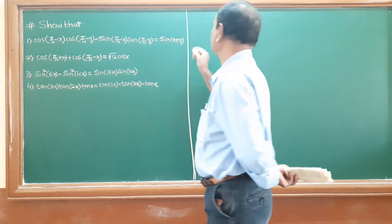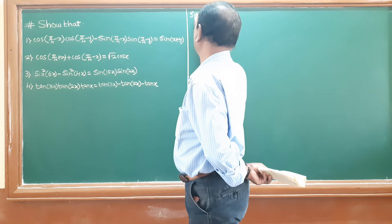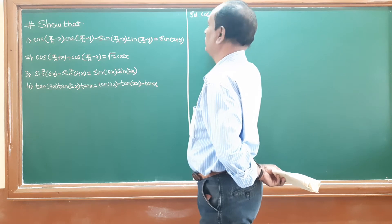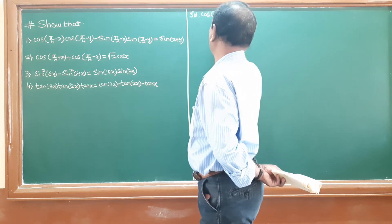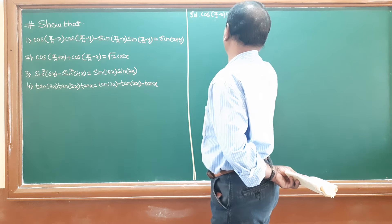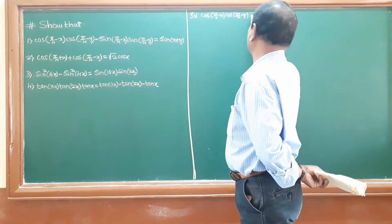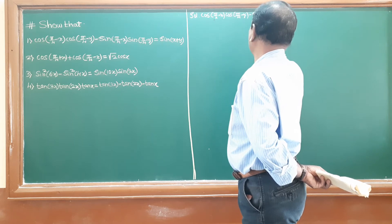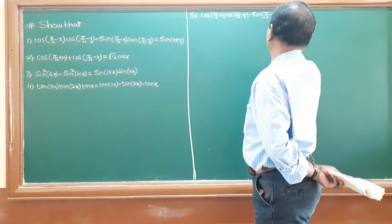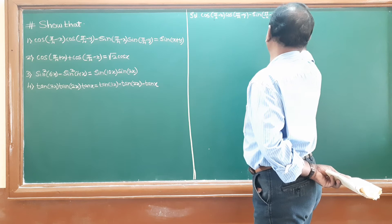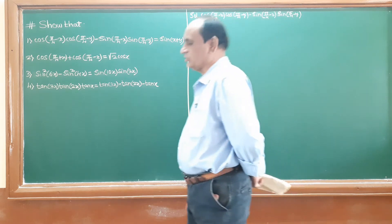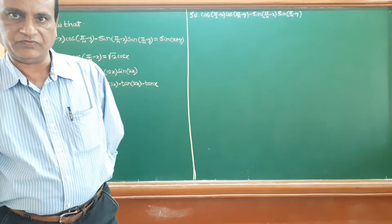Solution for the first problem: the problem involves cos of (5π/4 minus x) and cos of (5π/4 minus y), and then minus sin of (5π/4 minus x) into sin of (5π/4 minus y), and the answer is sin(x + y).